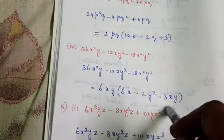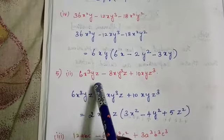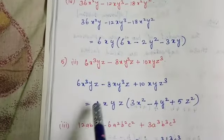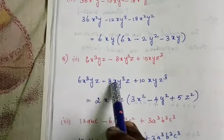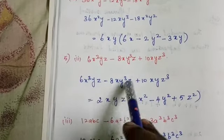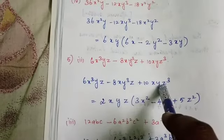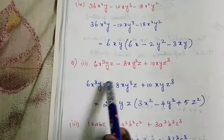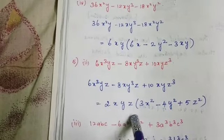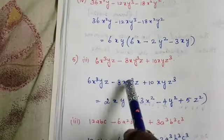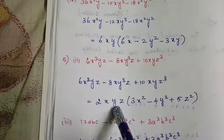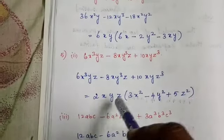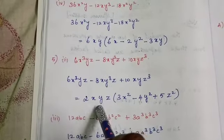Next: 6x³yz - 8xy³z + 10xyz³. The coefficients 6, 8, 10 all have 2 as common. For x: x³, x, x — smallest is x. For y: y, y³, y — smallest is y. For z: z, z, z³ — smallest is z. Common factor is 2xyz. Remaining: 6 ÷ 2 = 3, x³ gives x² remaining, so 3x²; 8 ÷ 2 = 4, y³ gives y² remaining, so -4y²; 10 ÷ 2 = 5, z³ gives z² remaining, so +5z². Answer: 2xyz(3x² - 4y² + 5z²).